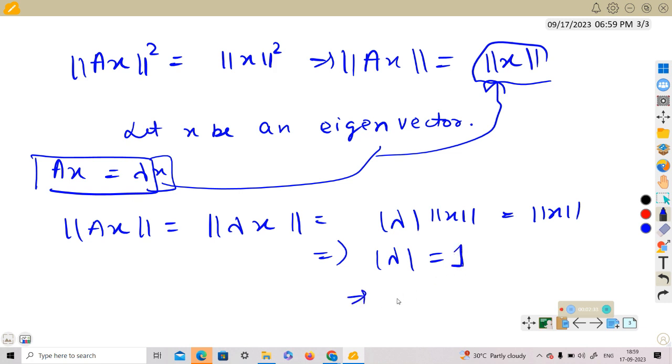So what are the possibilities of λ? λ can be plus minus 1. Hence, the only possible eigenvalues are plus minus 1 for an orthogonal matrix.